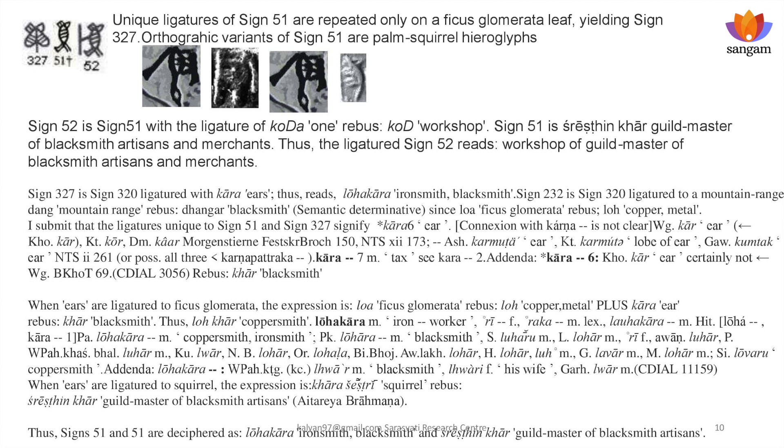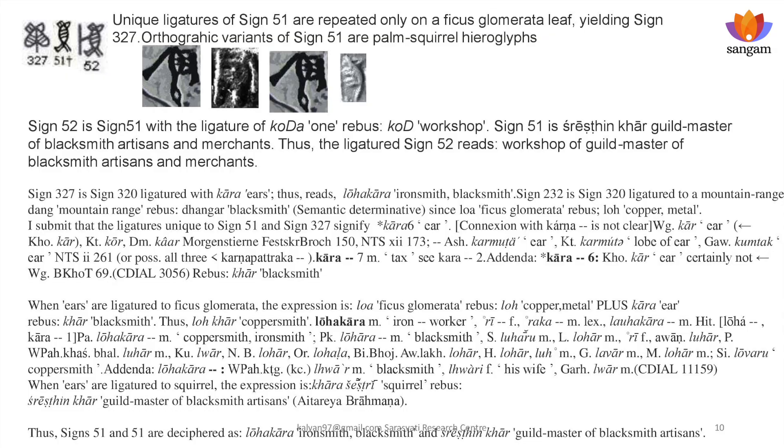The scribe was very clearly trying to communicate the importance of two categories: metals as a resource, and the artisans organized into a guild as a resource. The guild became a major social organization creating wealth for the nation, which could be shared among the people. The details can be seen with words and expressions from almost all Indian languages which relate to this hieroglyph — hieroglyphs of loha, Ficus glomerata, and the squirrel palm squirrel.